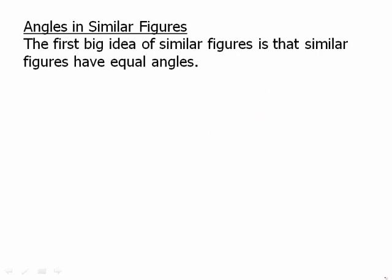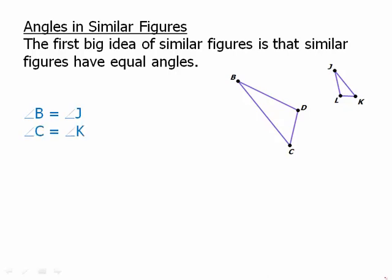The first thing we'll talk about are angles in similar figures. The first big idea is that similar figures have equal angles. So, angle B corresponds to J, meaning angle B has to equal angle J. Angle C has to equal angle K. And angle D has to equal angle L. Each angle is equal to its corresponding angle in the similar triangle.